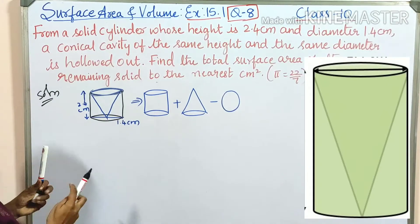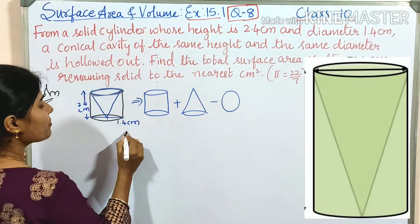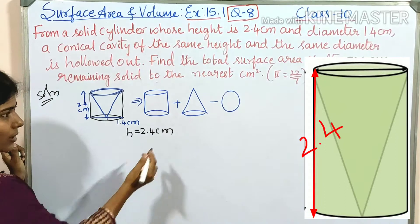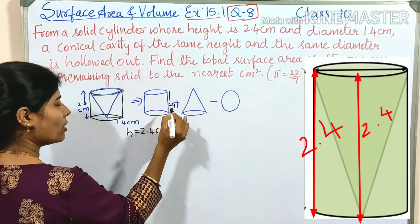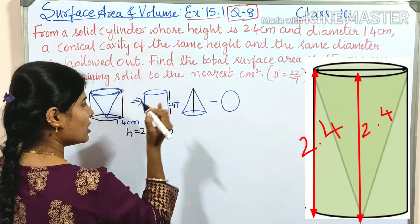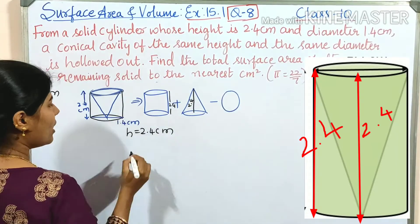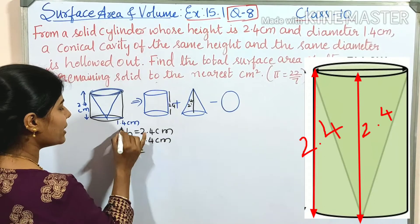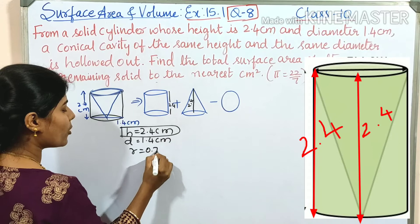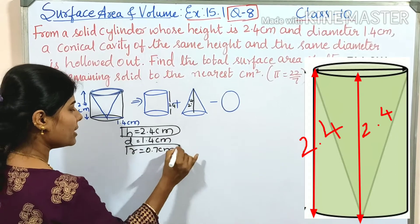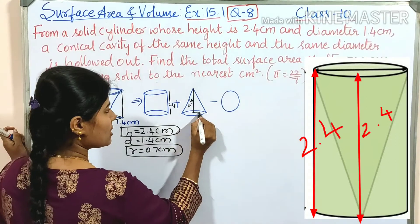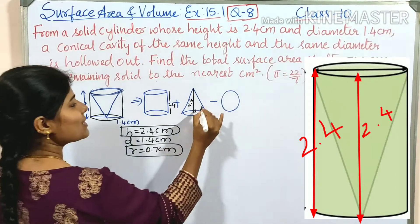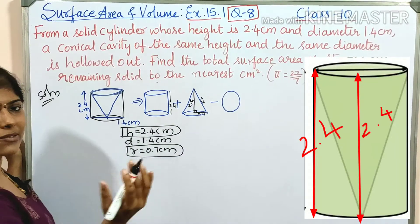Given: height is equal to 2.4 centimeters — this applies to both the cylinder and the cone. Diameter is equal to 1.4 centimeters, so radius is equal to 0.7 centimeters. We don't yet know the slant height of the cone.